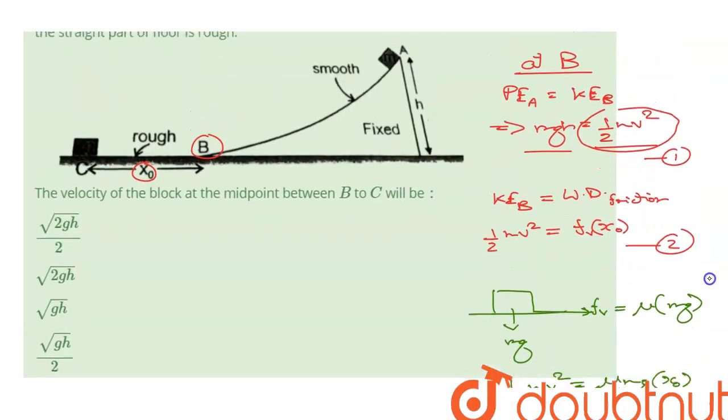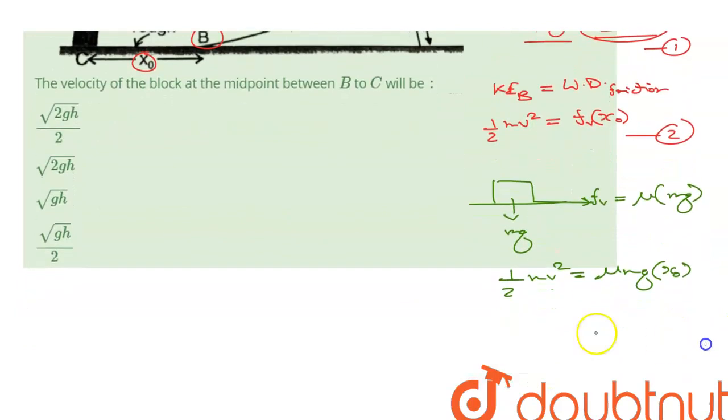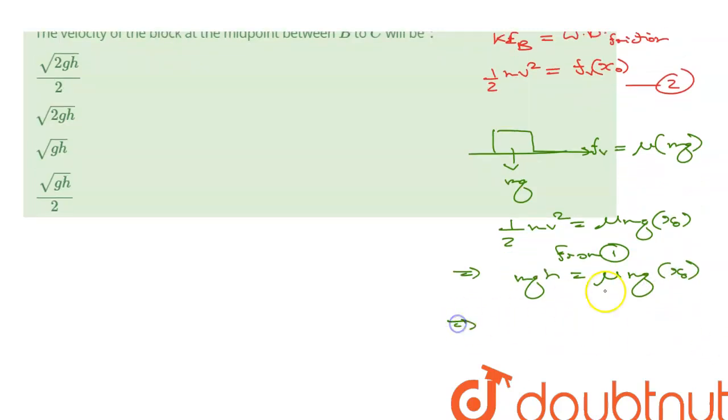From equation 1, we can put 1/2 Mv squared is equal to Mgh. So from equation 1, Mgh is equal to mu Mg x0. Mg and Mg get cancelled, so mu is equal to h by x0.